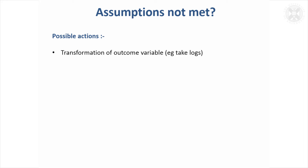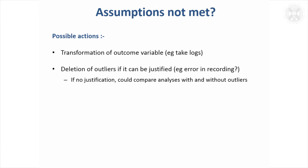But of course, sometimes you'll be in a situation where they're not — the model isn't suitable. You could then consider a transformation of the outcome variable; you could try taking logs, for example. You could look for the outliers and think about whether you can justify taking them out. It's important to justify taking them out and know that the value was actually wrong — you can't just say it's a bit low so I'll take it out. If you can't justify taking it out, you could try analysing the data with it in and with it out and seeing if it makes a big difference.